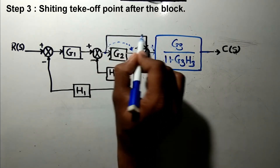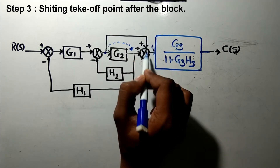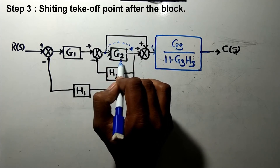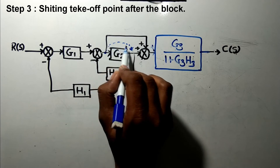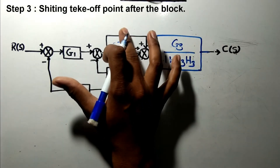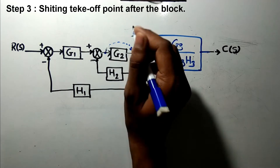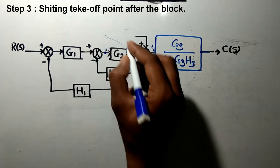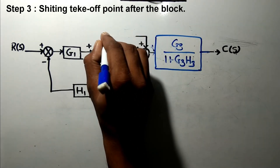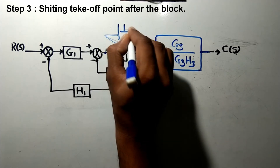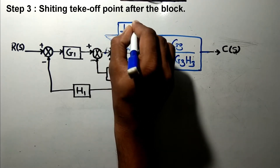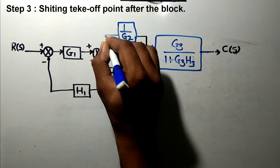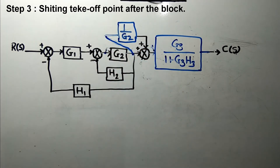If we shift a takeoff point after a block, this branch will be divided by the transfer function of that block. The transfer function of this branch is one since nothing is connected here — it has unity transfer function — and it is divided by G2. Therefore, shifting this takeoff point gives a transfer function of 1/G2, because it has unity feedback divided by G2.